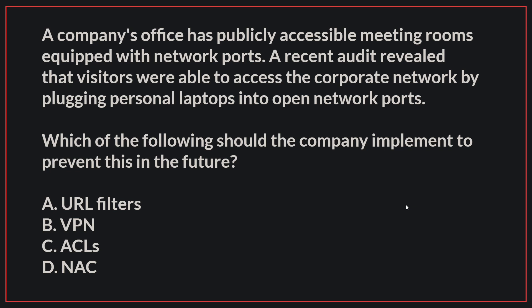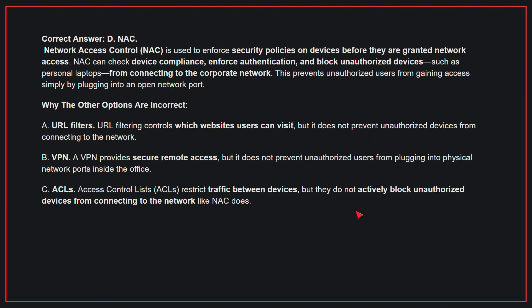A company's office has publicly accessible meeting rooms equipped with network ports. A recent audit revealed that visitors were able to access the corporate network by plugging personal laptops into open network ports. Which of the following should the company implement to prevent this in the future? The correct answer is D, NAC. NAC is used to enforce security policies on devices before they are granted network access. NAC can check device compliance, enforce authentication, and block unauthorized devices such as personal laptops from connecting to the corporate network.